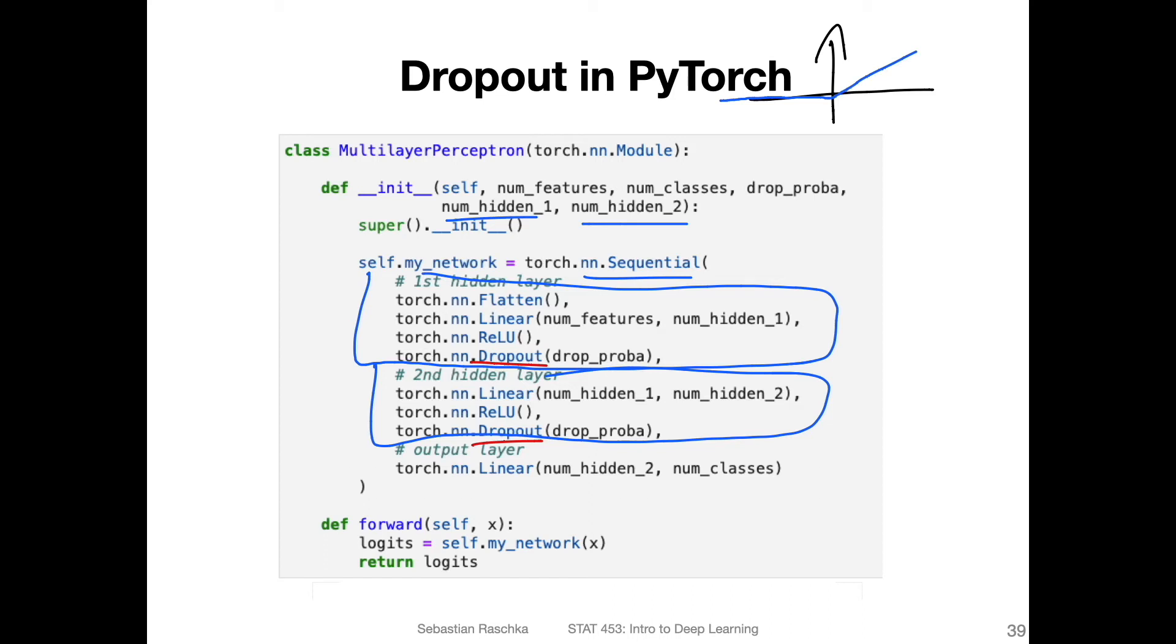However, it would make a difference if we have, let's say logistic sigmoid, because for the logistic sigmoid at zero, we have this s-shaped curve, right? We have this s-shaped curve for the logistic sigmoid. And if the input is zero, then we will get actually a pretty large output of point five. So usually, for ReLU, it doesn't matter whether we have dropout before or after, but for other activation functions, it might matter. So it's always good to have dropout after the activation just to be consistent.